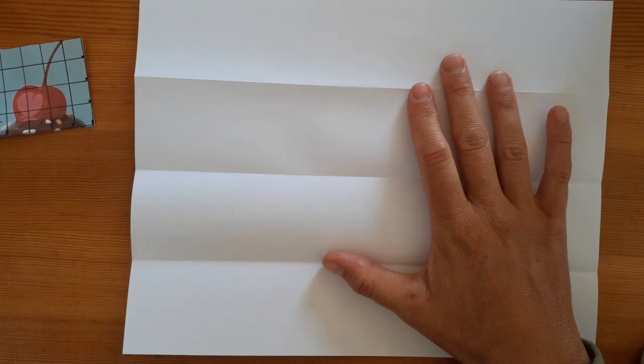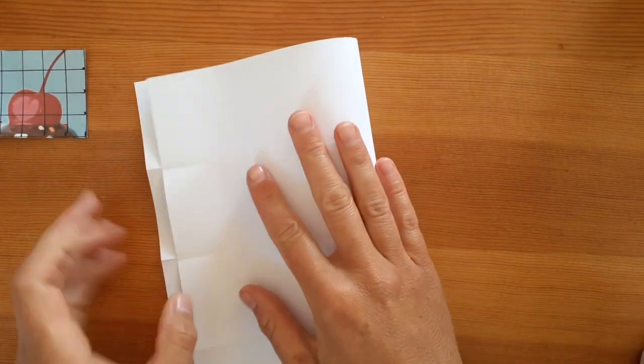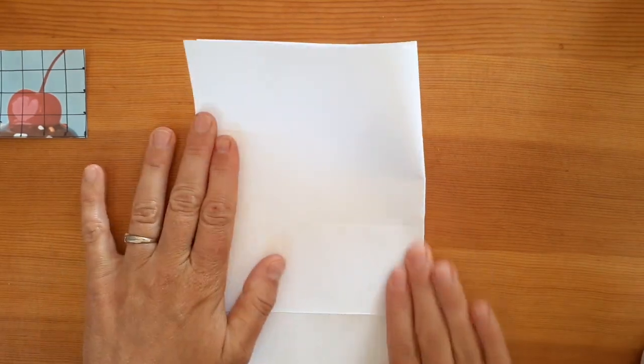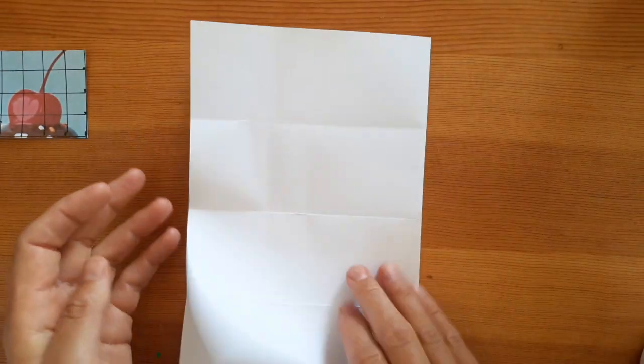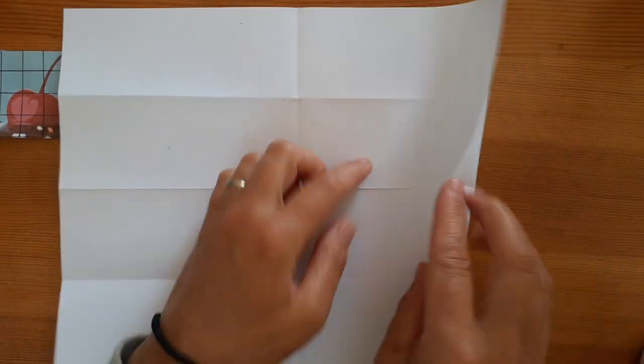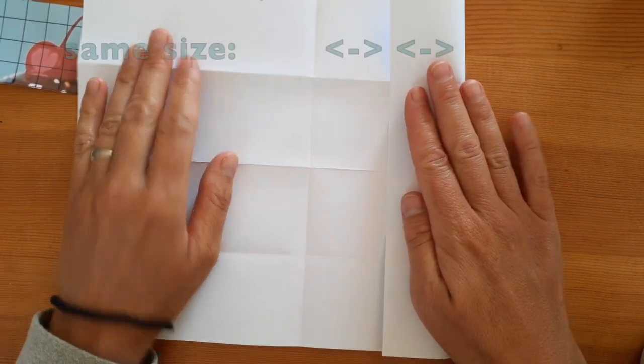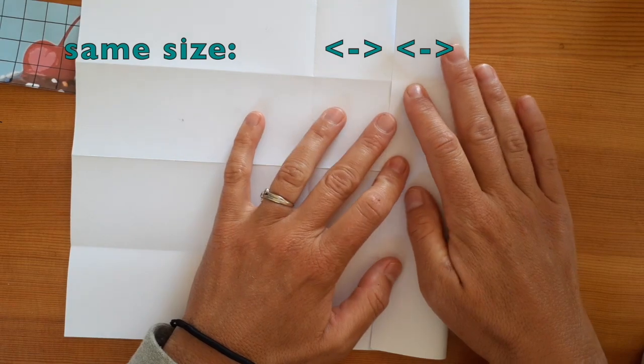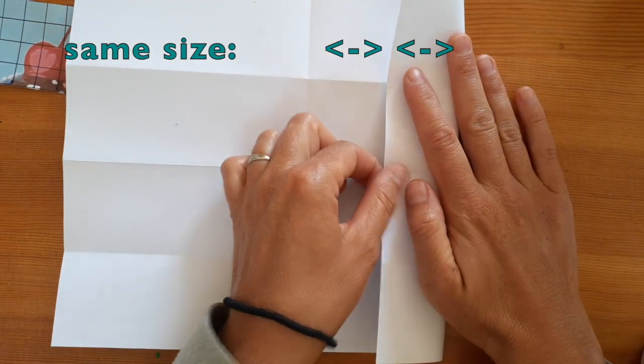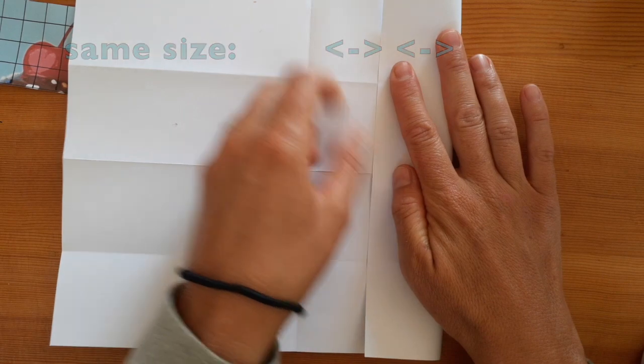Now you're going to fold your paper in half, bringing the two shorter sides together and creasing in the center. We'll open it up, but this time we're only going to fold the paper halfway to the center line so that the folded side and the space between the folded side and the center are the same size.